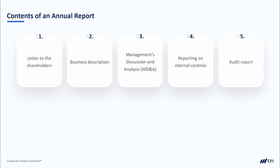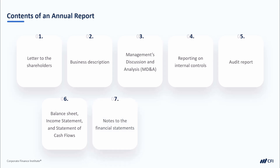Next, we get the audit report, and it's important that that's there, testifying to the fact that the financial statements have been audited by a reputable firm. That then leads us to the financial statements — the big three: the balance sheet, the income statement, and the statement of cash flows. And if we want more detail into those financial statements, we dig into the notes to the financial statements, which can be quite a lengthy section. We typically will also see near the end of the annual report some earnings per share data, as well as a listing of directors of the company.